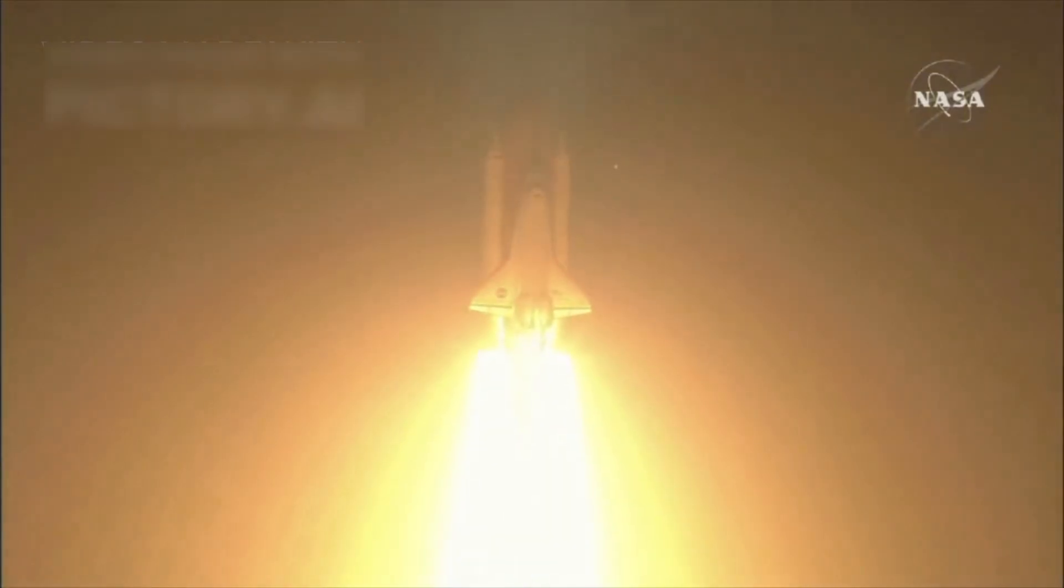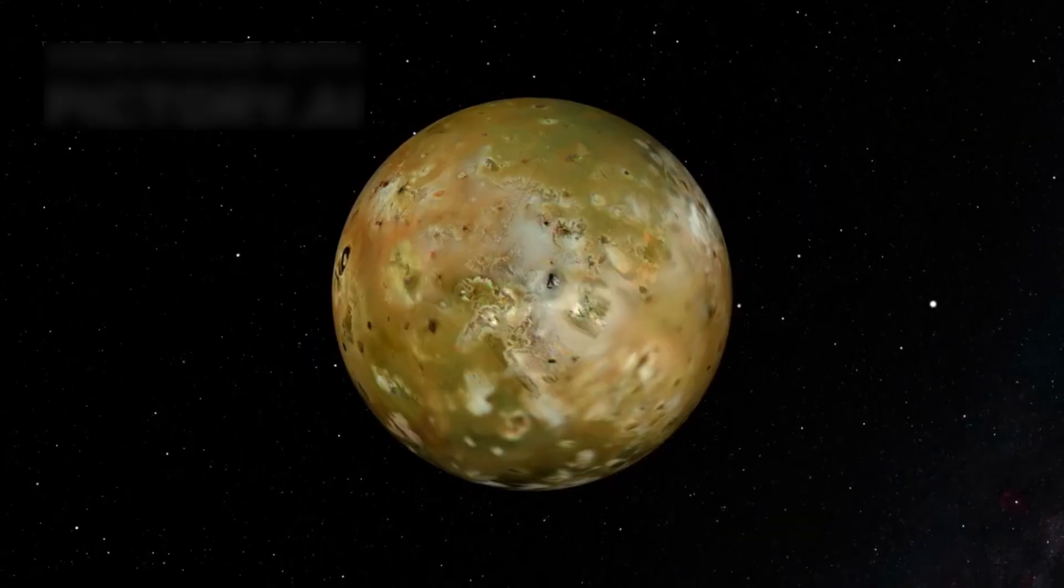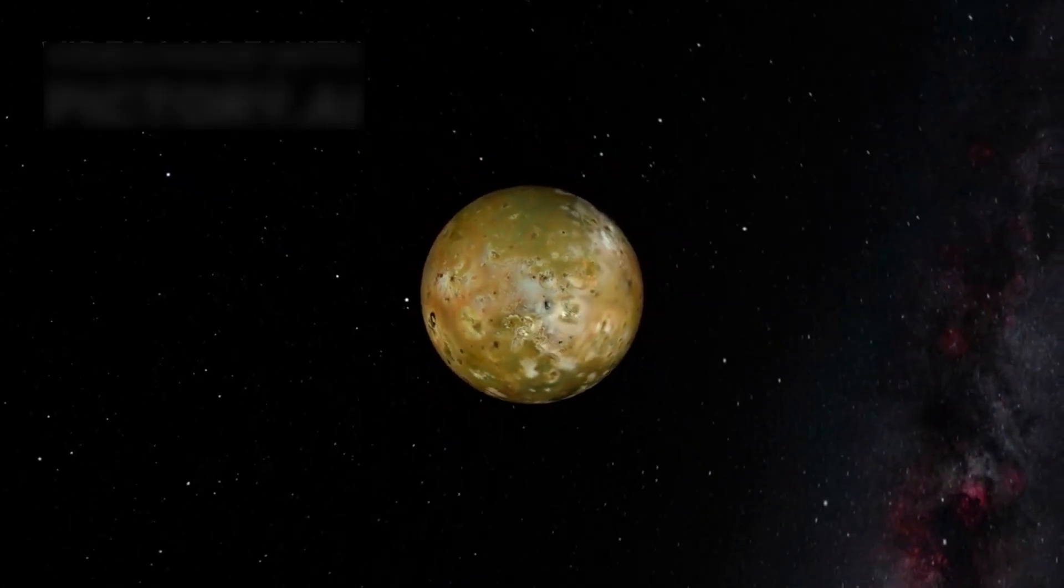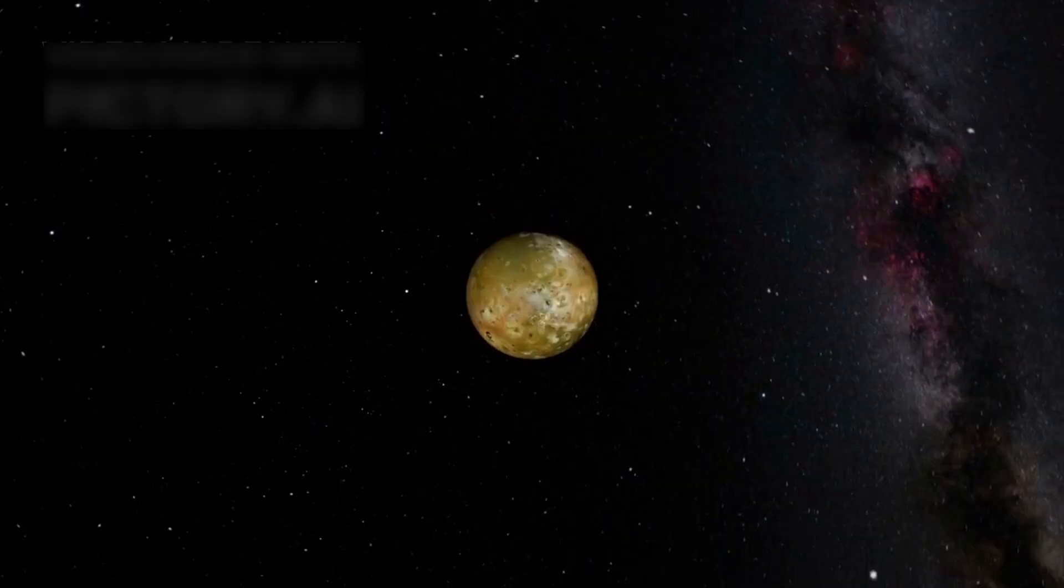But what followed changed history. Voyager 1 captured close-ups of Jupiter's great red spot, volcanic eruptions on Io, and Saturn's mesmerizing rings.